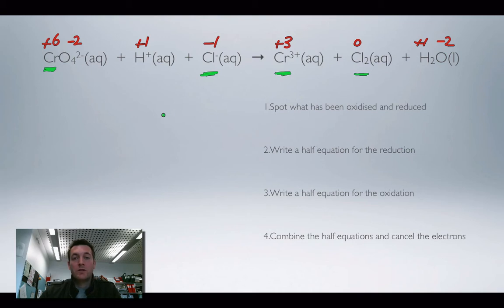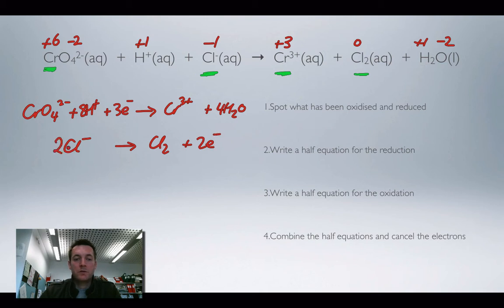So now it's time to write half equations. I've done this before, so I should be able to do it here as well. This isn't new. This is the old stuff, so I'm going to do this quite quickly. We've got a chromate ion turning into chromium 3+, four waters, eight H+, three electrons to balance up the charge. And so that's my reduction process, because we've gained electrons. Chloride ions are losing their electrons and turning into chlorine molecules, so two electrons there, two chloride ions.